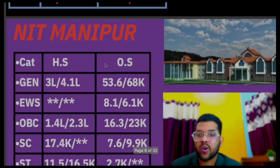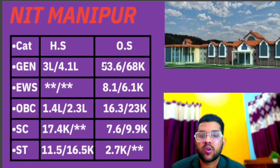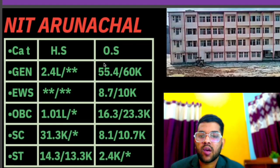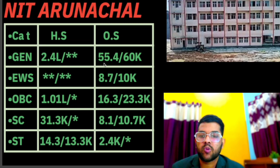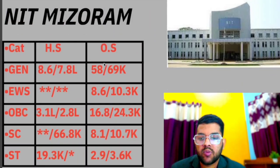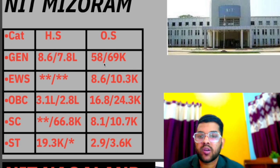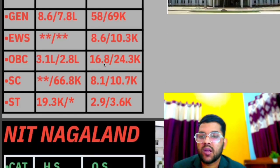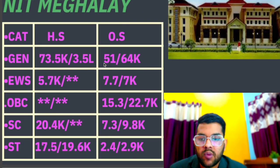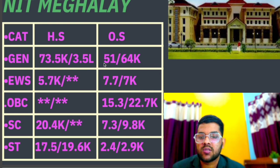For NIT Manipur: general 53,600, EWS 8,100, OBC 16,300, SC 7,600, ST 2,700 — for other state male. For NIT Arunachal: 55,400, EWS 8,700, OBC 16,300, SC 8,100, ST 2,400 — for other state male; female data after slash, homestate data sideways. For NIT Mizoram: 58,000, EWS 8,600, OBC 16,800, SC 8,100, ST 2,900 — for other state male.